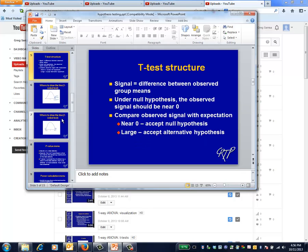To produce a t-test, begin by recognizing that the signal is the difference between the observed group means. When this difference is near zero, we should conclude the null hypothesis is true, that is, that the true group means are essentially identical.